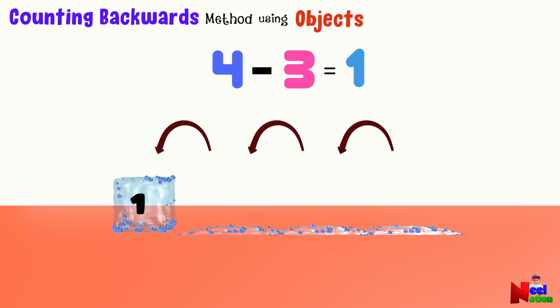So when we start with 4 ice cubes and 3 melt away, we are left with just 1 ice cube. That's how subtraction works when we count backwards. Interesting.